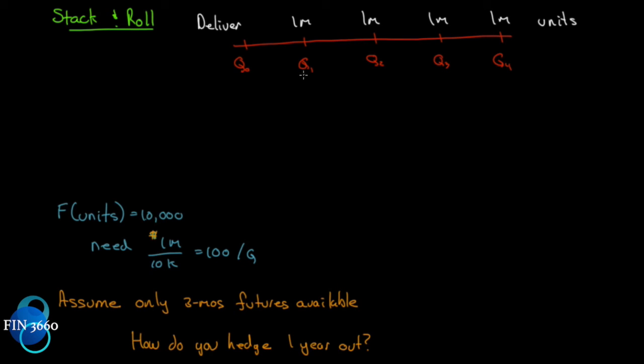But let's assume that there are only three month futures available. So all we can do is hedge out three months. So we can hedge out the first three months rather easily, but what about the six month, the nine month, and the 12 month delivery date? There is nothing further that we can use. So we can wait until quarter one is done, hedge out quarter one, enter into new three month contracts for here, enter into new ones for the third quarter and so on, or we could stack and roll them.